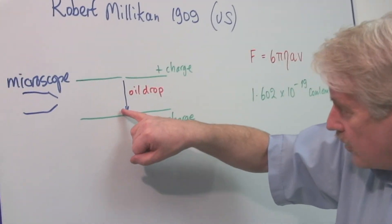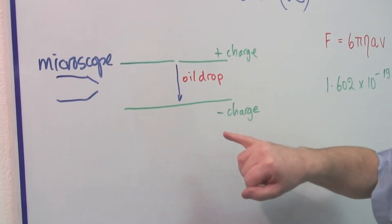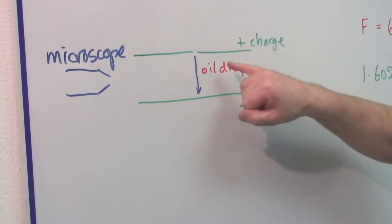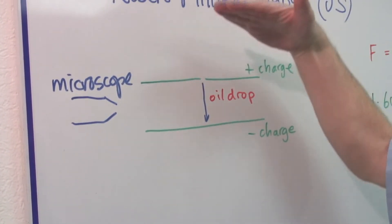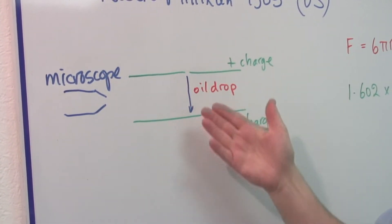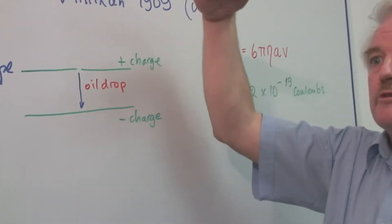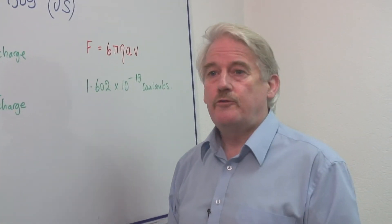Once it's got to the bottom, it has a negative charge. By increasing the voltage here, you can make it go back up to the top, and then let it fall again.